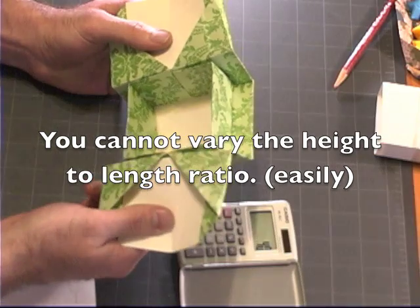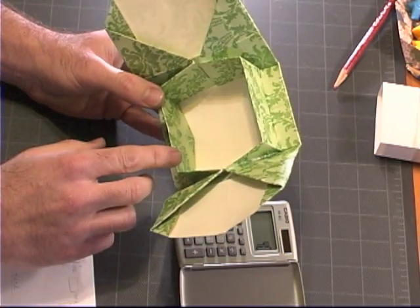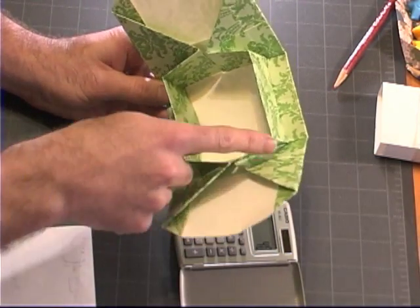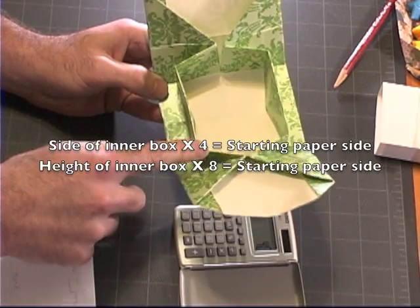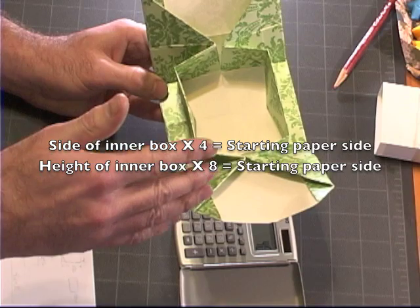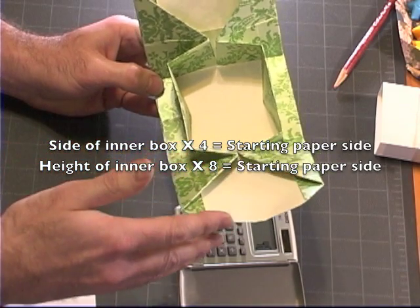So to sum up really quick, for each of these sides, you figure out how long you want the side to be and multiply that by 4. That will give you the size of the paper you need to start with.